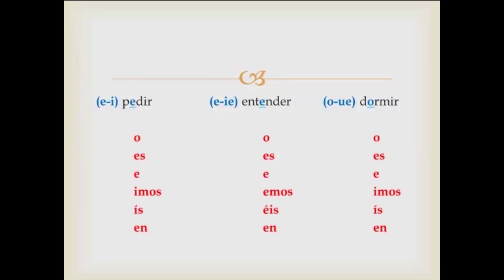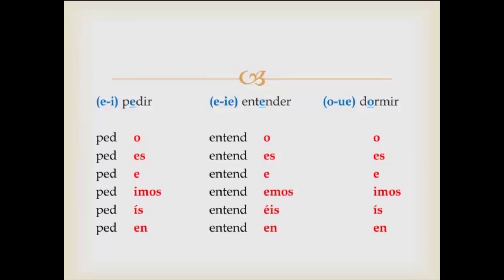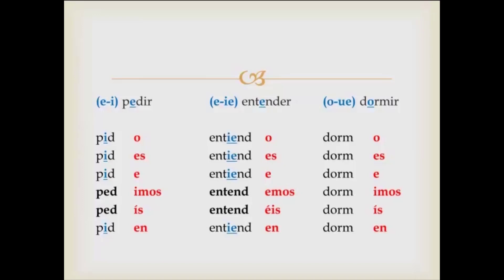Let's see what they look like conjugated. The endings are er's and ir's, so those we should have no problem with. These are the endings — let's look at the stems. Let's look at pedir: pido, pides, pide, pedimos, pedís, piden. To understand — entender: entiendo, entiendes, entiende, entendemos, entendéis, entienden.